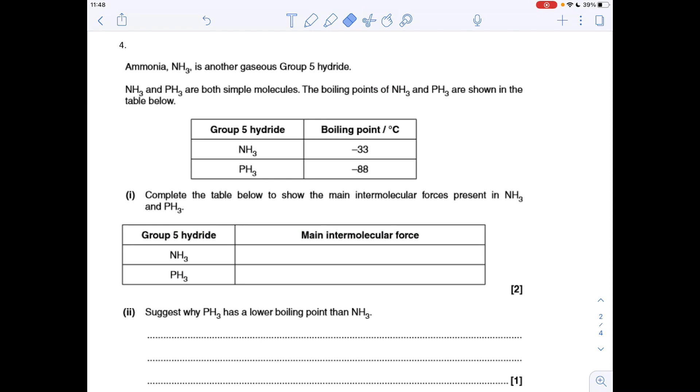Question four, the main intermolecular force in these two Group 5 hydrides. In ammonia NH3, you've got a nitrogen directly bonded to a hydrogen, and so that's one of the ways you can get hydrogen bonding. The other two is an O directly bonded to an H, or an F directly bonded to an H. So it's going to be hydrogen bonding for this one.